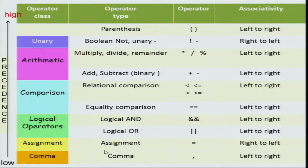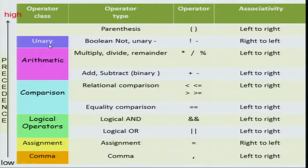Let us take a look at the precedence and associativity table. The goal is not to memorize it, but to be able to understand how an expression will be evaluated when given this table. Parentheses are above all — once you parenthesize an expression you are saying this is the order you want, overriding any other precedence or associativity rule. Then you have unary operations with the second highest precedence, then arithmetic operations, then comparison operations, logical operators, assignment, and so on. Within arithmetic operations, multiply, divide, and modulo have higher precedence over plus and minus.